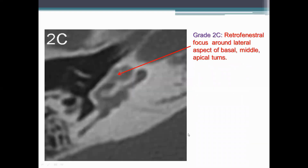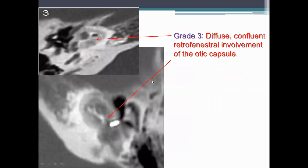In grade 2c, there is a retrofenestral focus around the lateral aspect of the basal turn, middle turn, and apical turn of the cochlea — the entire cochlea is involved. In grade 3, there is diffuse and confluent retrofenestral involvement of the otic capsule, as shown in the CT scan figures. In the superior figure, involvement of the wall of the otic capsule is seen at the basal, apical, and middle turns along with the fenestral area. In the lower figure, the wall of the otic capsule is involved with hypodense bony areas visible.